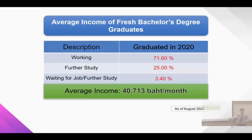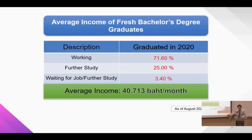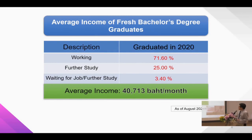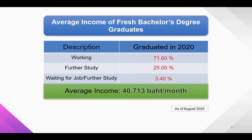This shows the average income of fresh bachelor degree graduates for the graduates of academic year 2020, which ended in July 2021. About 70% of the graduates work and 25% pursue further study, and about 3.4% had not yet made decisions at that time. The average income of our fresh graduates is around 40,000 baht.